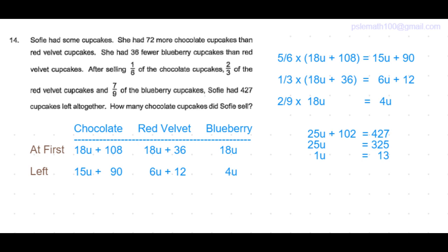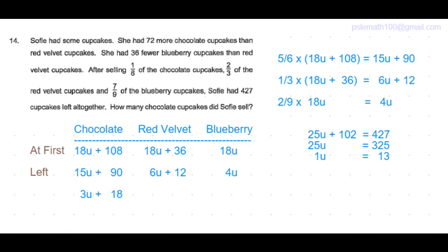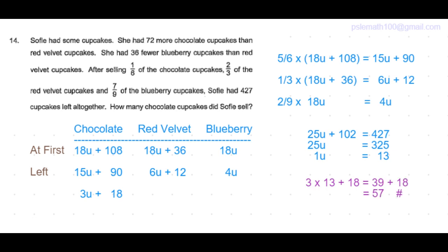The question is: how many chocolate cupcakes did Sophie sell? She sold one sixth of the chocolate cupcakes. One sixth of 18 units is 3 units, plus one sixth of 108 is 18. Or we can also do 18 units minus 15 units is 3 units, and 108 minus 90 is 18. So 3 units plus 18 equals 3 times 13 plus 18, which equals 57. She sold 57 chocolate cupcakes.